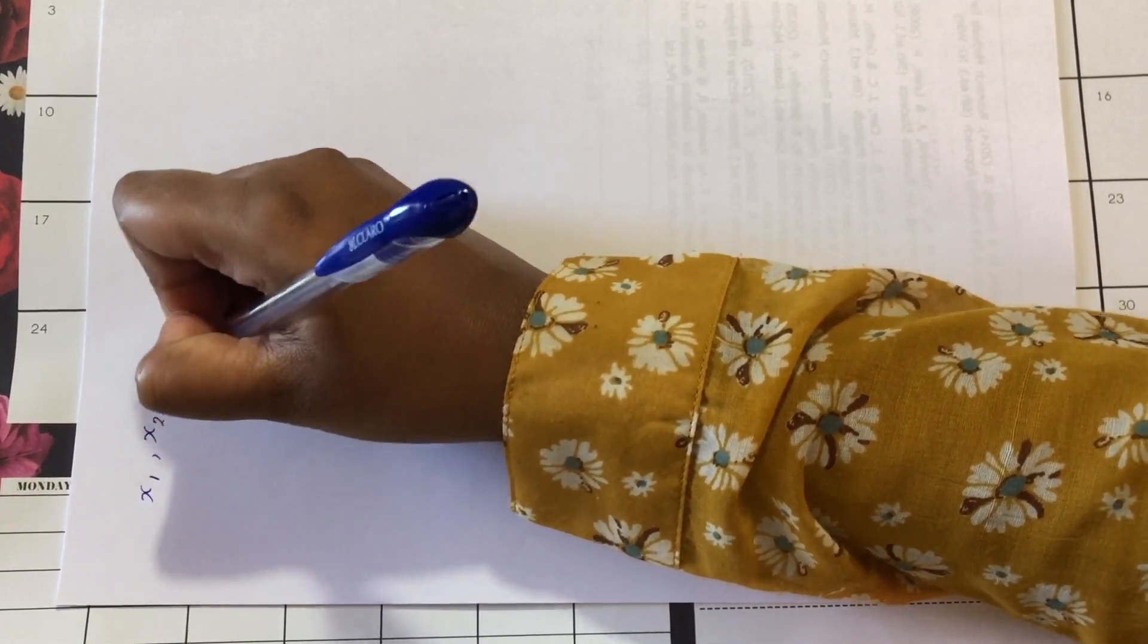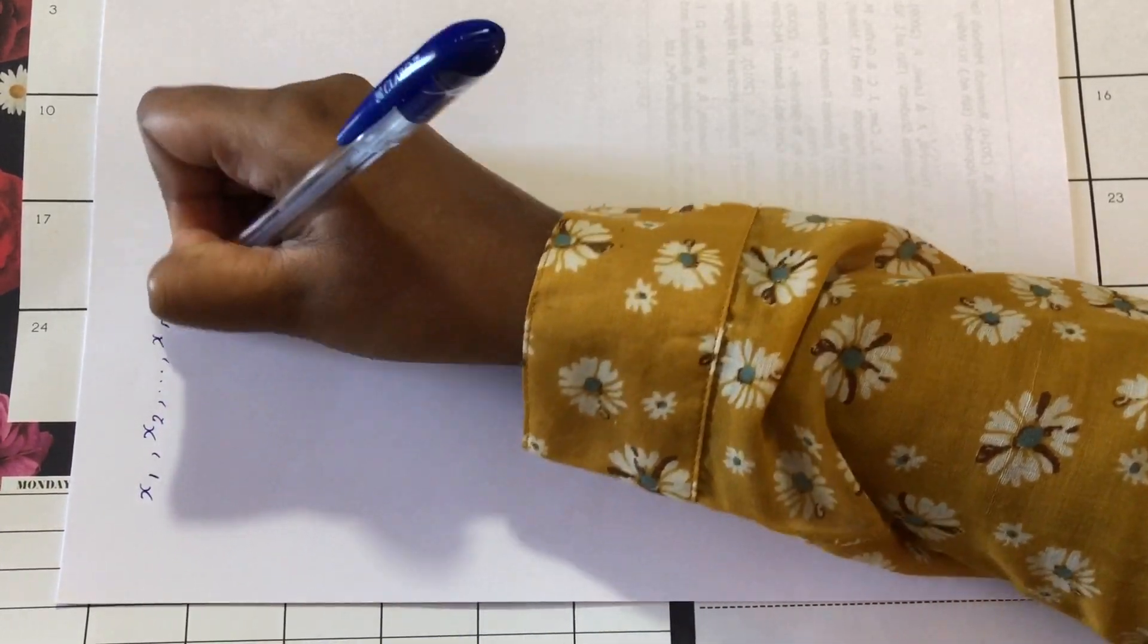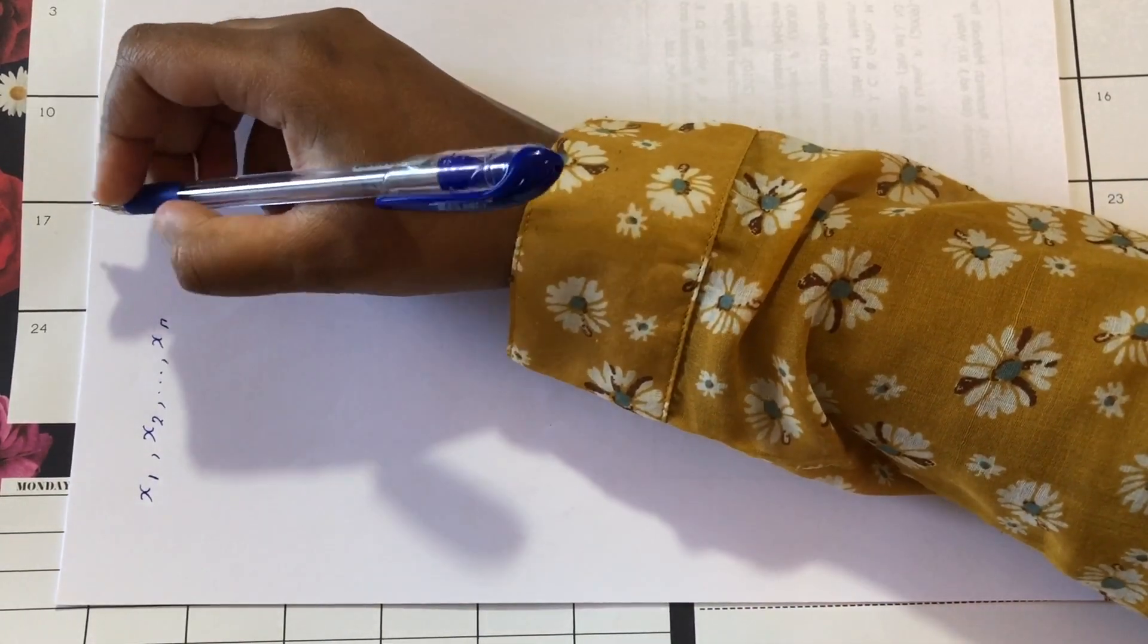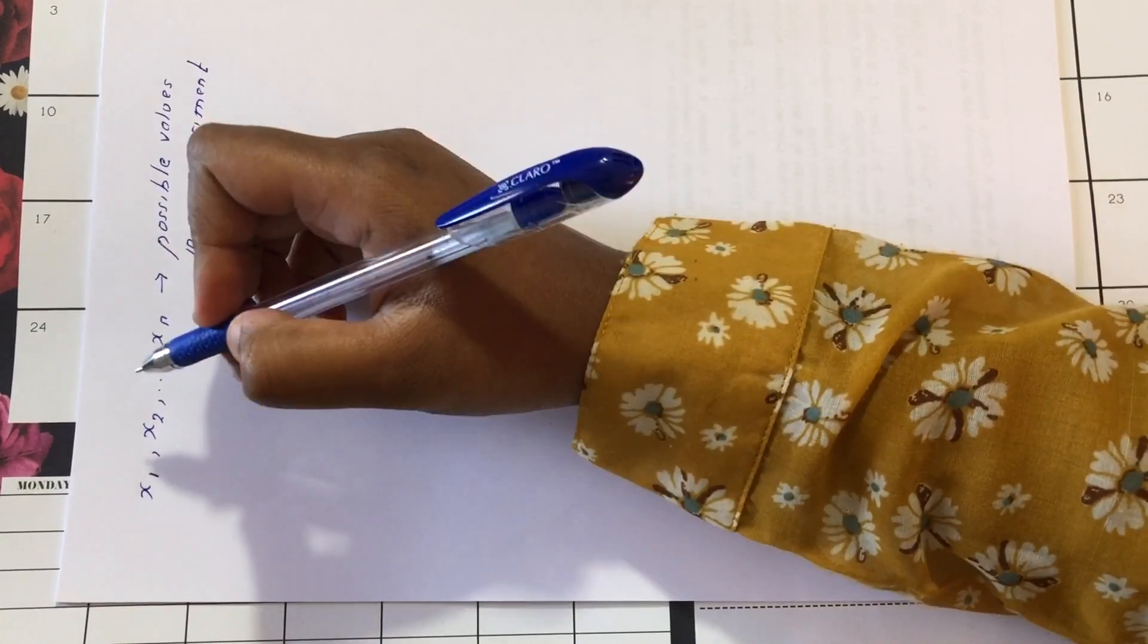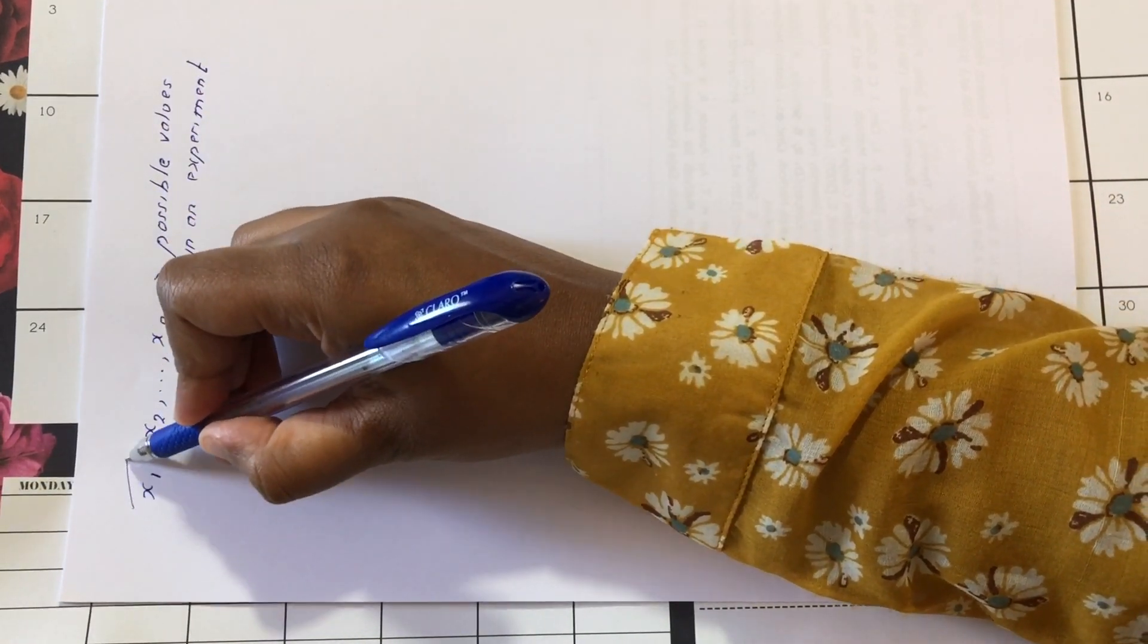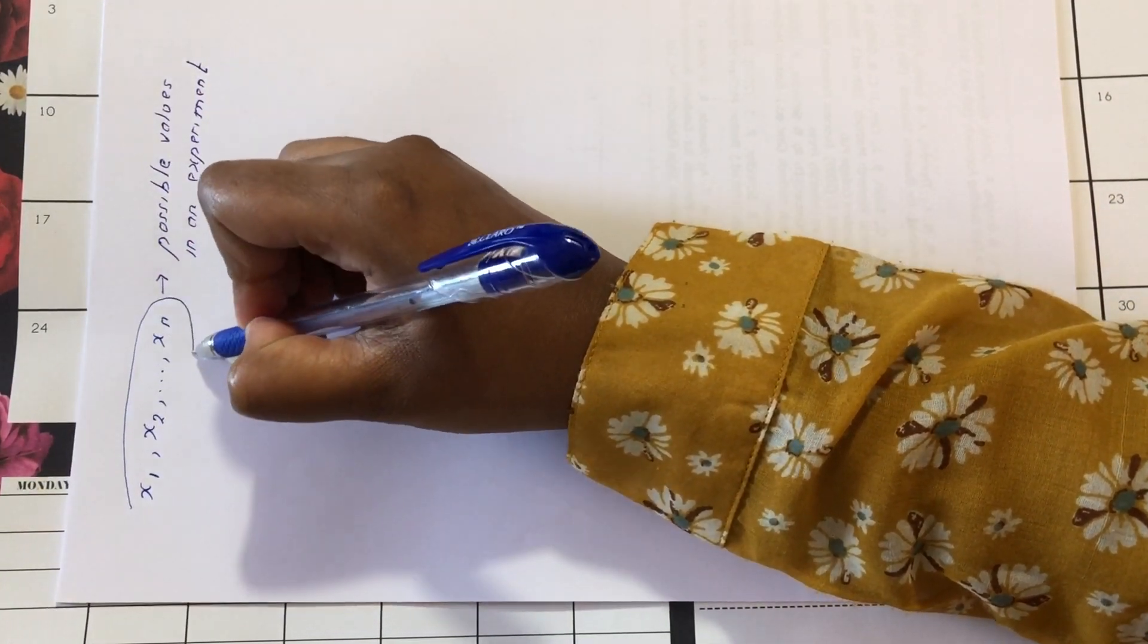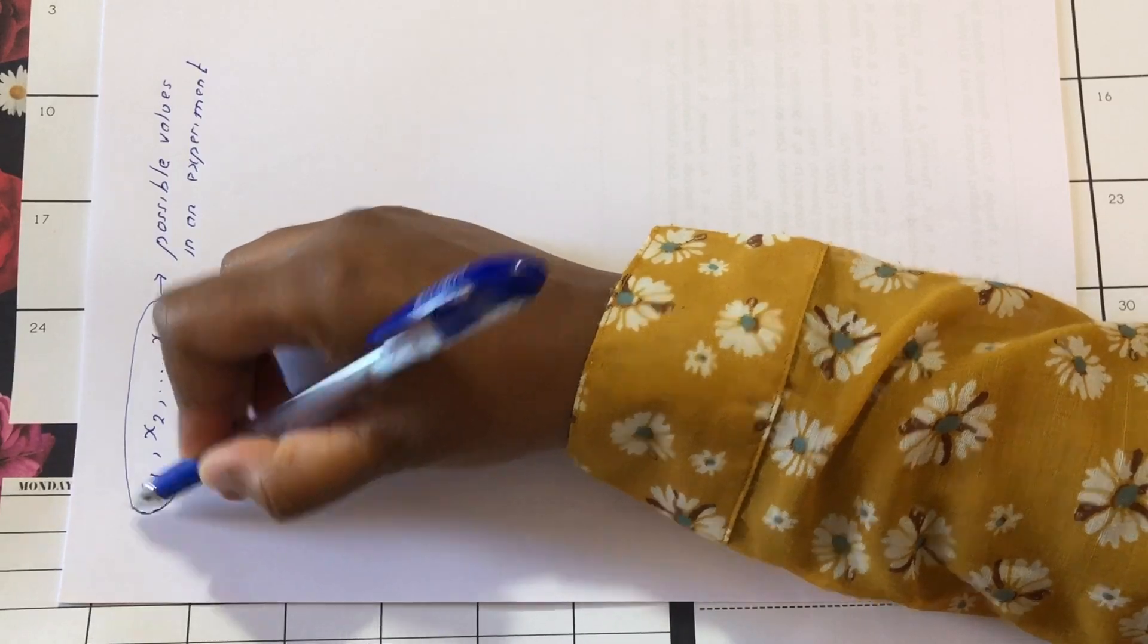Capital X is the random variable and it can take x1, x2 till xn.